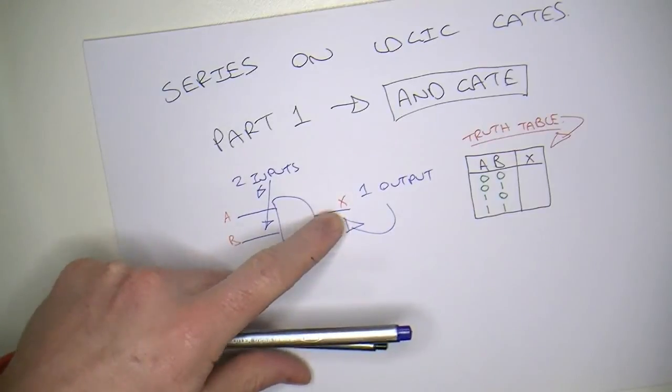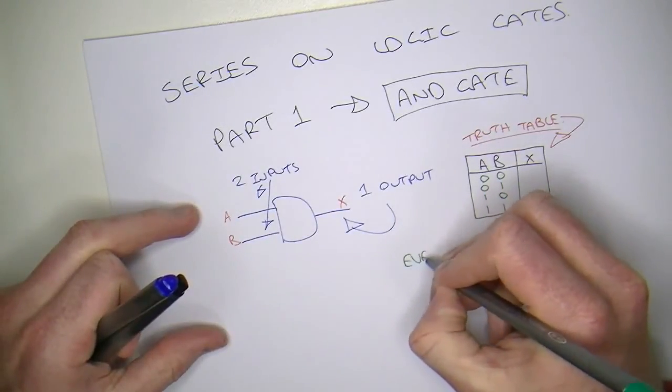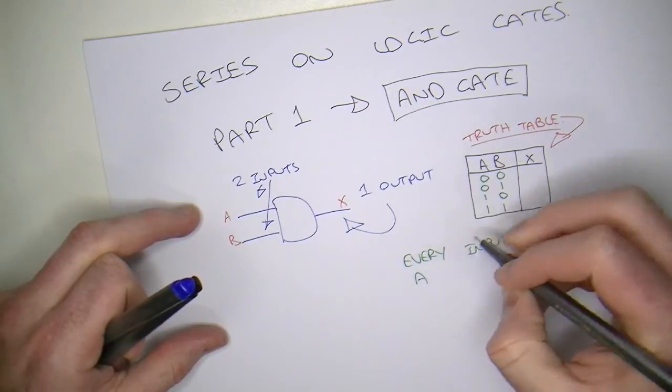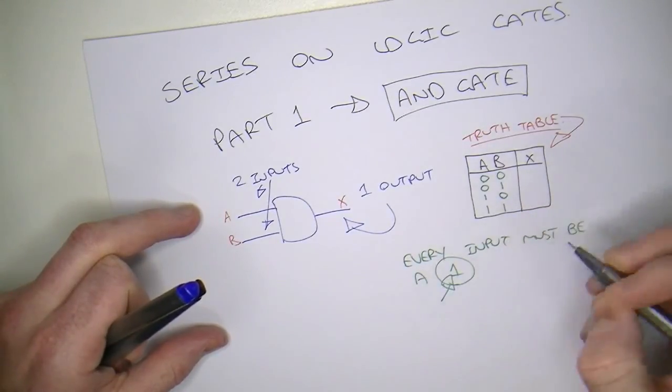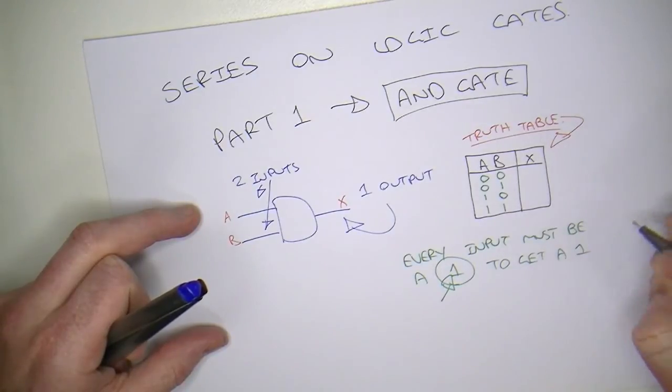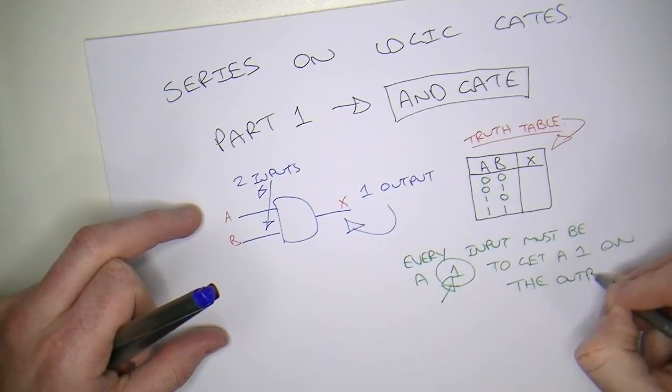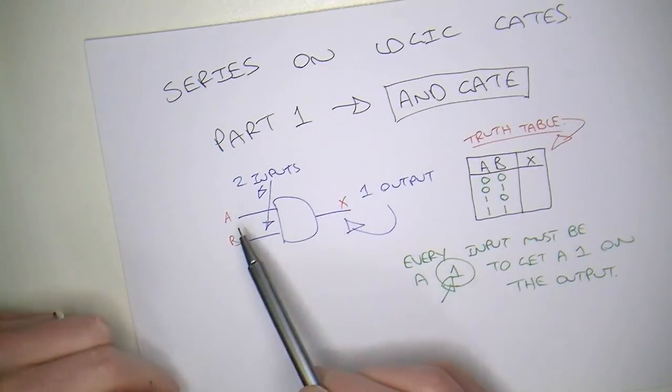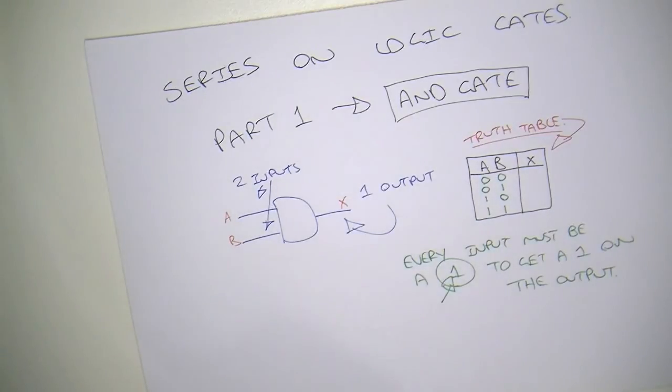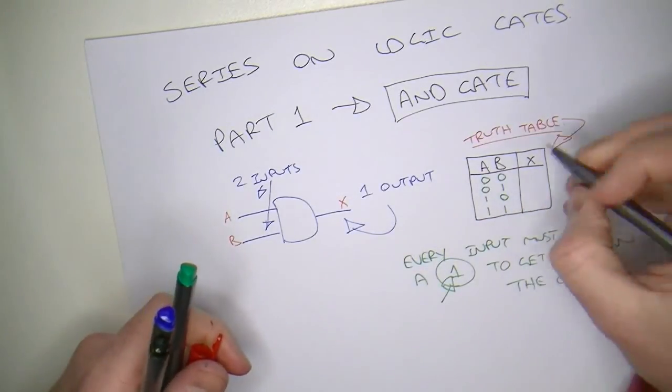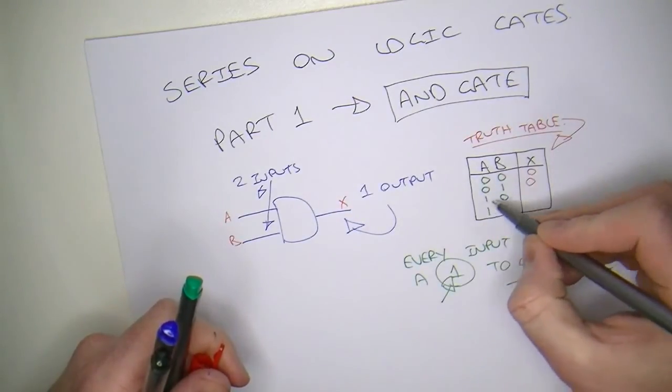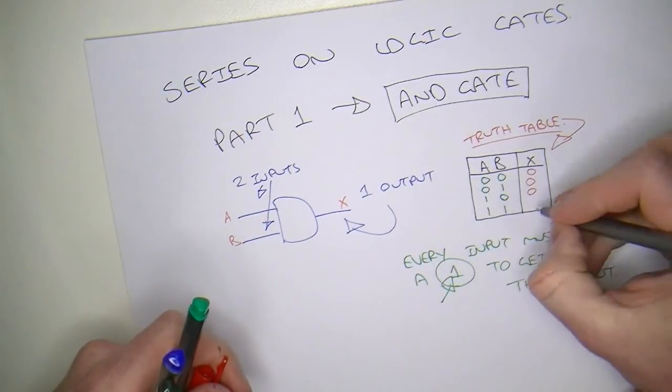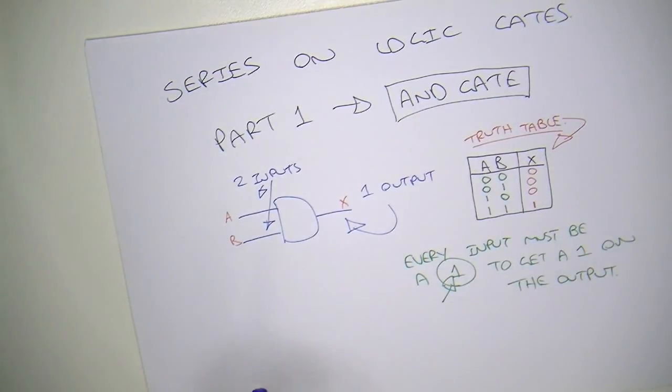Now, a good way to remember what the output is going to be for an AND gate is every input must be a 1, must be a 1, to get a 1 on the output. So, what we're looking at here is, the output will only be a 1 if every single input is a 1. So, we've got a 0 and a 0. The output will be a 0. A 0 and a 1 will still be a 0. A 1 and a 0. The only time we will get a 1 on the output is when every single input is a 1. So, there's our two inputs. They're both 1, so now we'll finally get a 1.